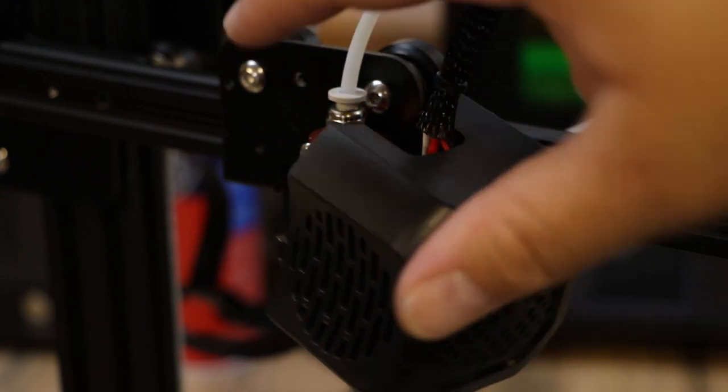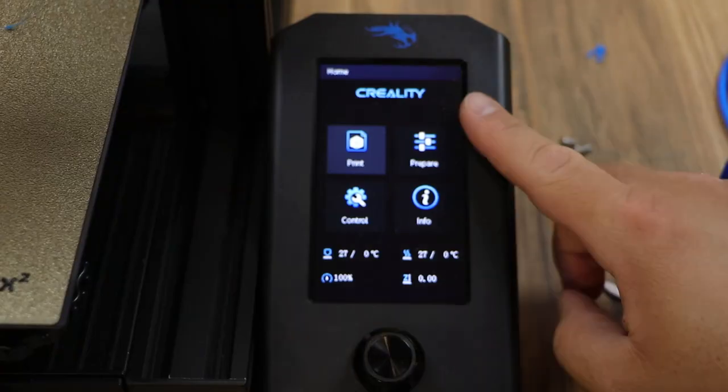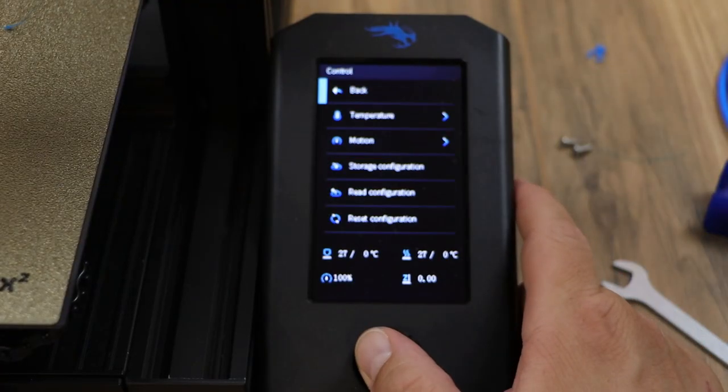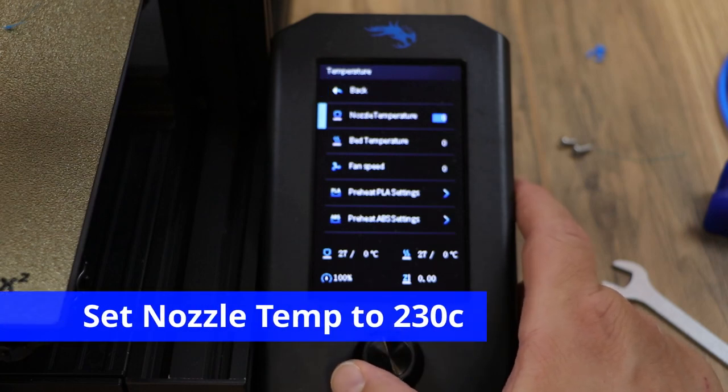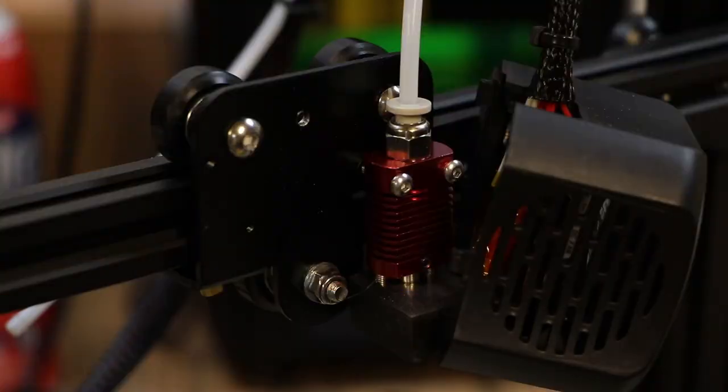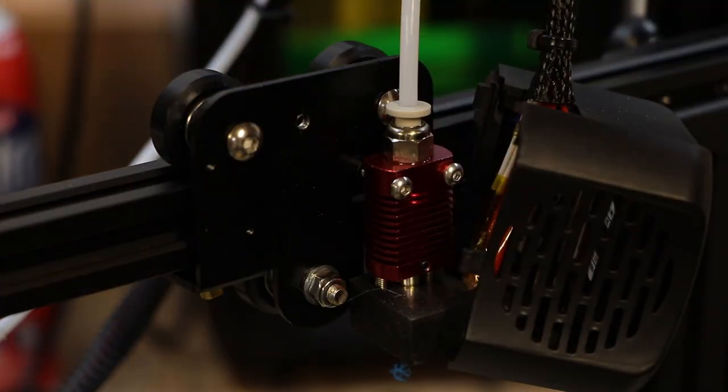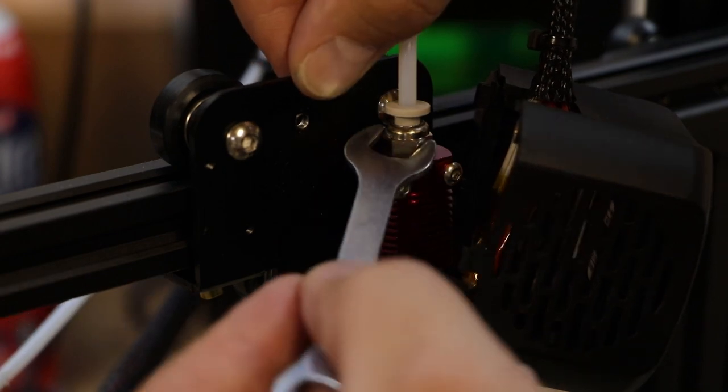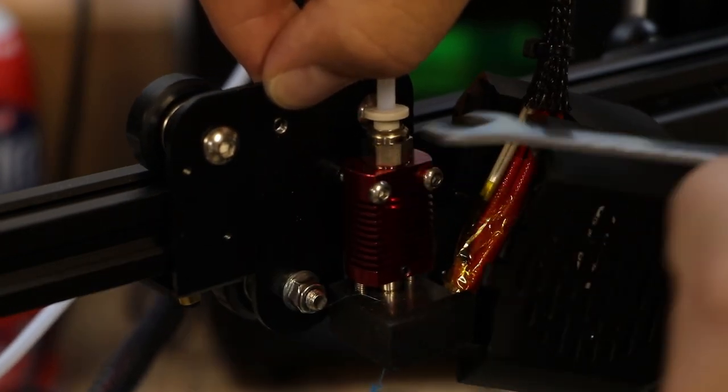Now we turn our printer on, we go to control temperature nozzle temperature and turn that up to 230 degrees. Once your hot end is that temp be very careful because it's going to be super hot. Take the wrench that came with the kit hold the top here loosen that Bowden coupler just like this.